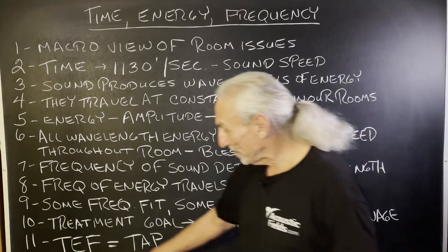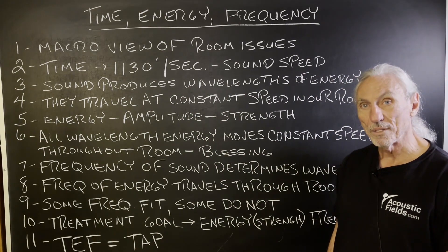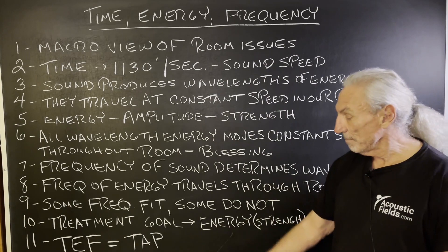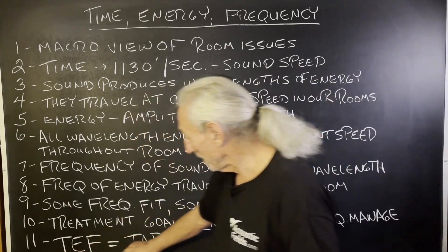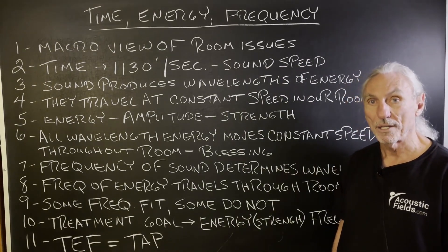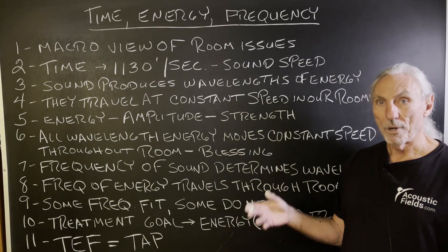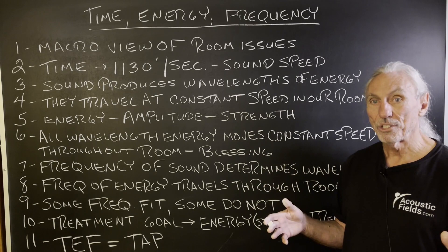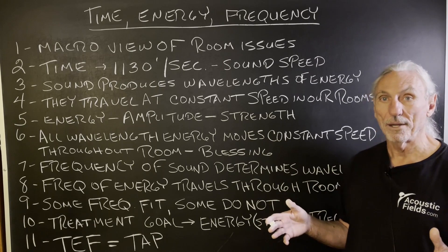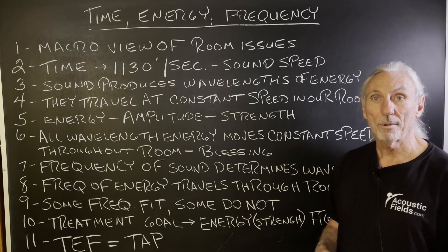We've got to manage time, energy, and frequency — and that really depends on the type of treatment, the amount of treatment, and where you place it. These three variables can be managed. Time, energy, and frequency can be managed with treatment, amount, and proper positioning. We're trying to put a lot of energy into a room that doesn't want it, and that's going to create distortion. All input into a room is air, and we have to manage that air rate — that's the goal.